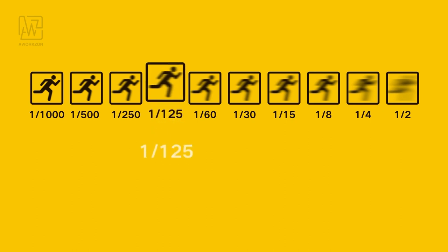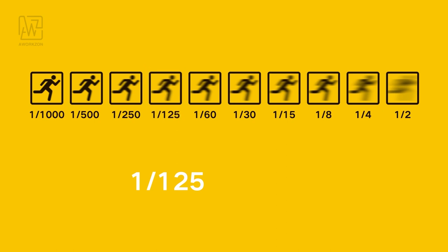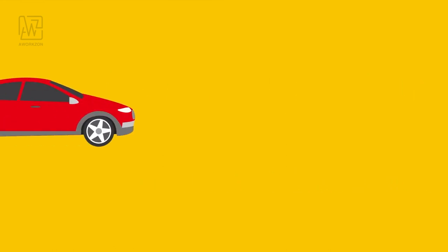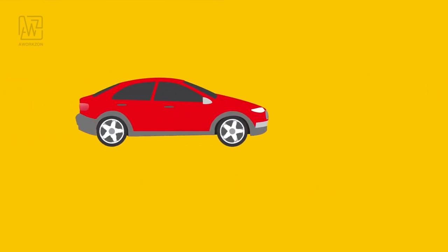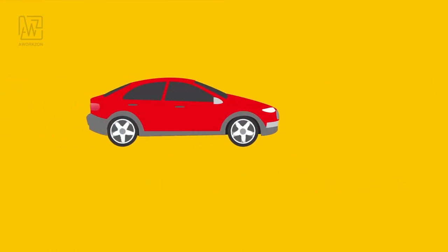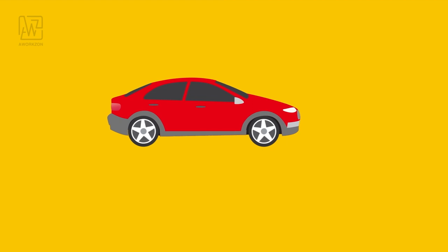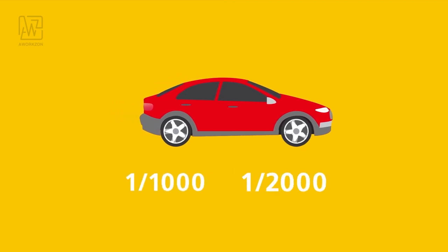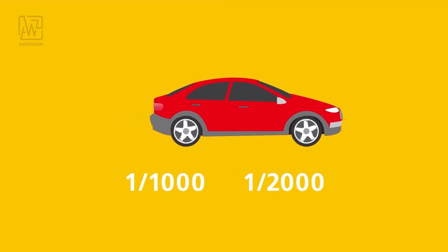Normally, 1/25th of a second is faster than a shaking hand, which can be regarded as a safe shutter speed. A well-trained photographer can stably hold the camera for 1/60th of a second or even longer. If you need to shoot fast-moving objects, you have to switch to faster shutter speeds, like 1/1000th or 1/2000th of a second.